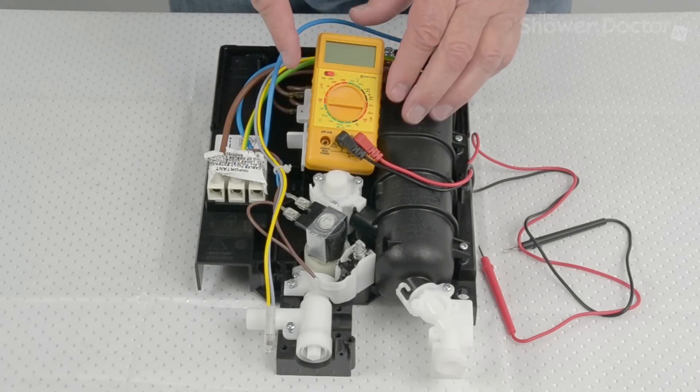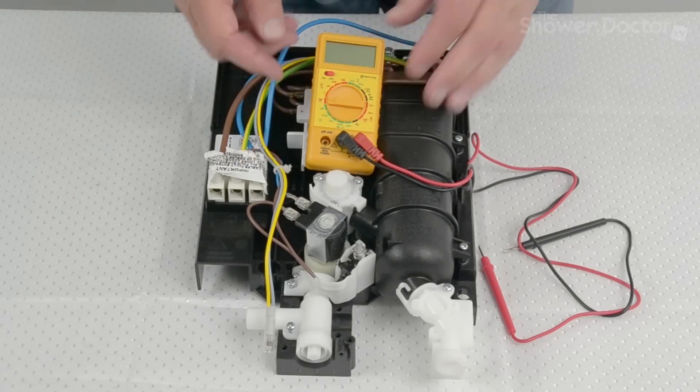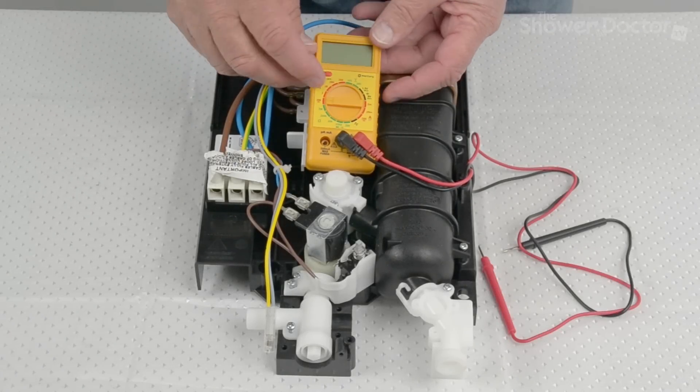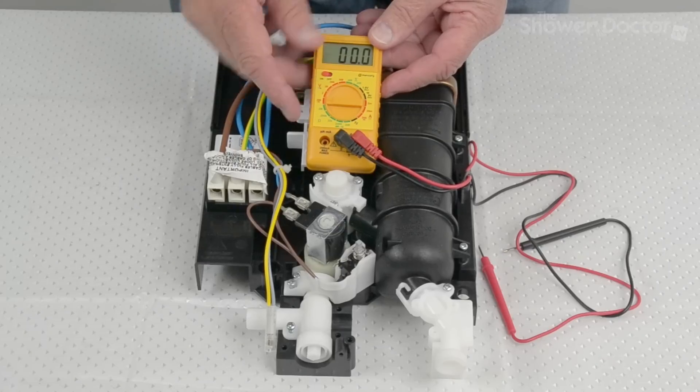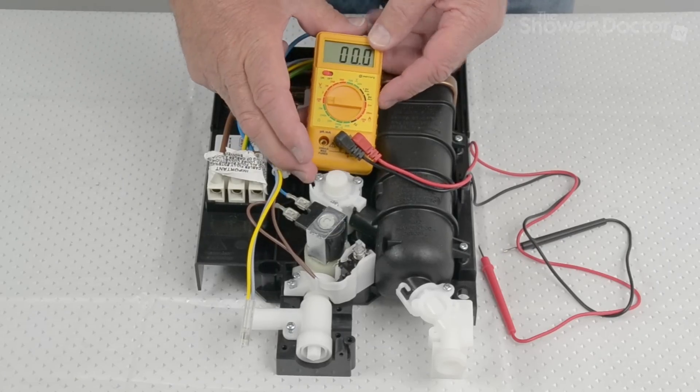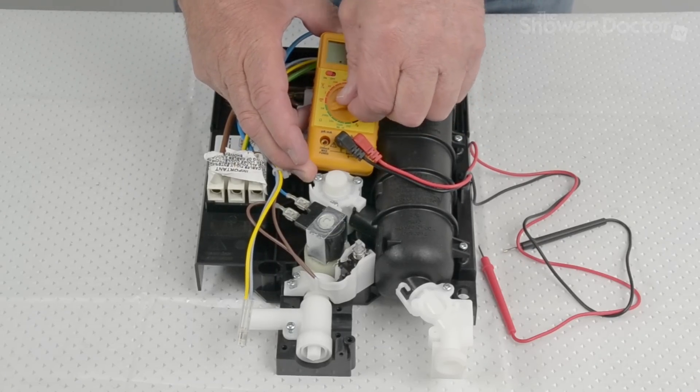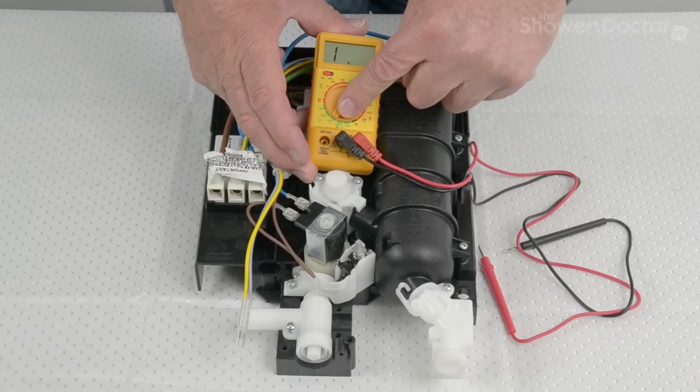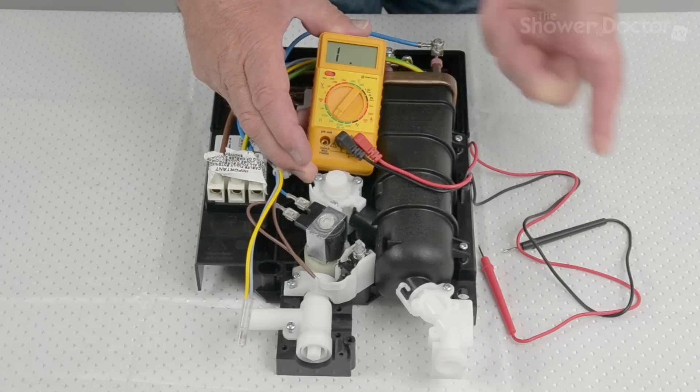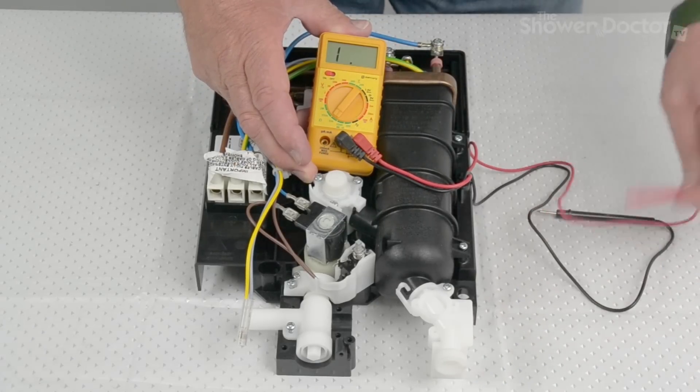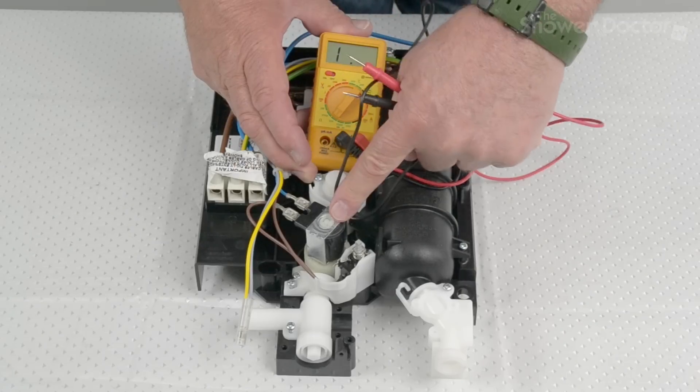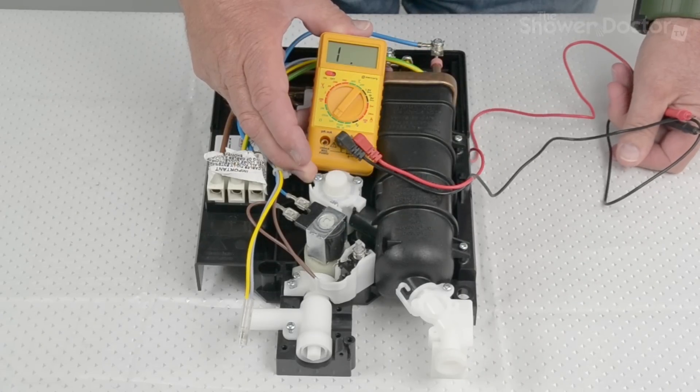Here we're going to use the multimeter to check a solenoid valve. So just to set the multimeter up, turn it on first. And then we need to set it on our multimeter to 20k ohms, which is down here. And what we're doing is measuring the resistance across the coil in the solenoid valve.